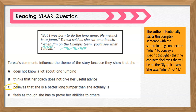Believe it or not, understanding word choices and sentence structure will help you with reading comprehension too. Look at this reading STAR question. Notice the complex sentence in the quote from the story: when I'm on the Olympic team, you'll know what I mean. The author intentionally starts this complex sentence with the subordinating conjunction when to convey that the character believes she will be on the Olympic team. She says when, not if. This matches the idea in the correct answer choice C: Teresa believes that she is a better long jumper than she actually is.